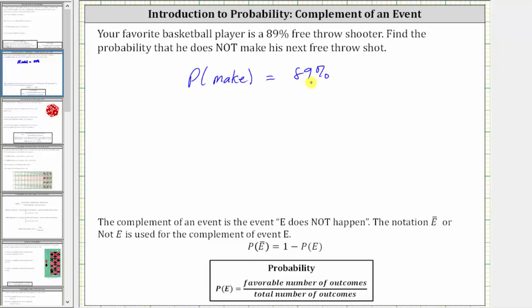Because there are only two possible outcomes for the next free throw, he will either make the free throw or not make the free throw. The probability he will not make the next free throw, which we'll indicate by the probability of no make...